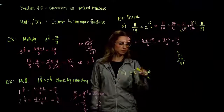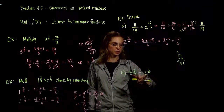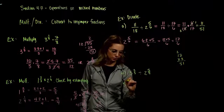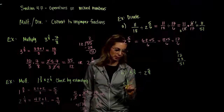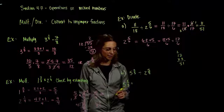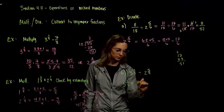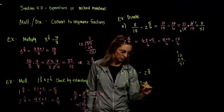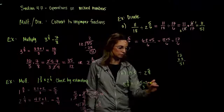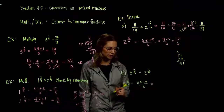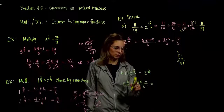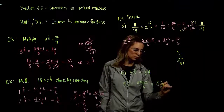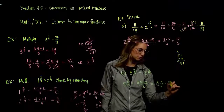Same story for part B, but in this case we'll have to convert two mixed numbers. Let's take five and two-thirds and convert it to its improper form: bottom times the outside plus the top, all over the bottom. Three times five is fifteen, plus another two gives us seventeen-thirds.